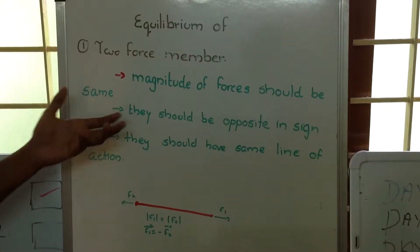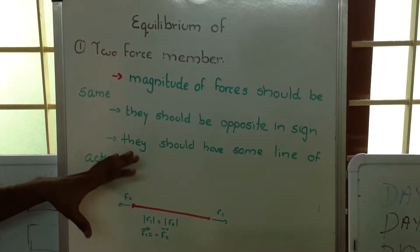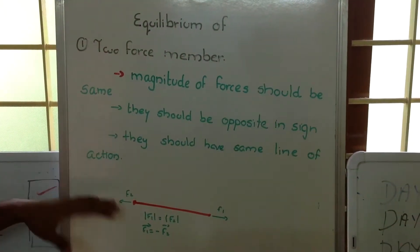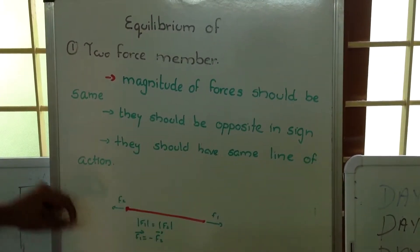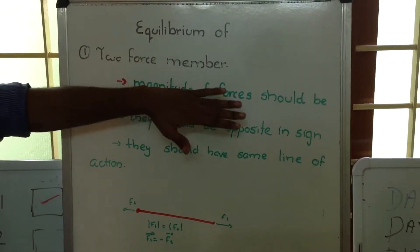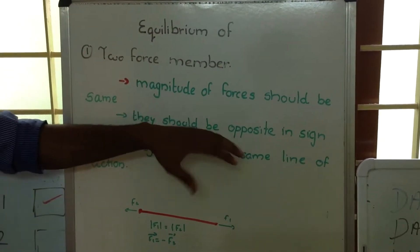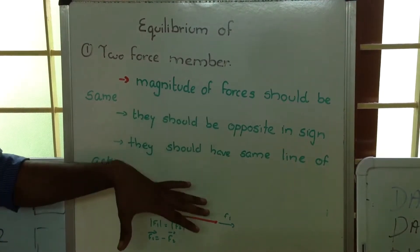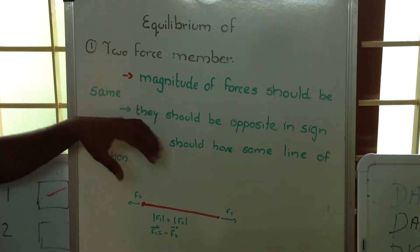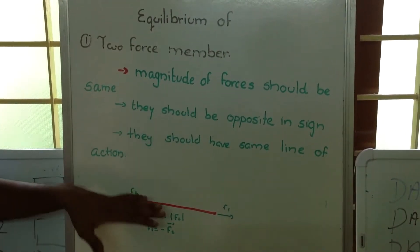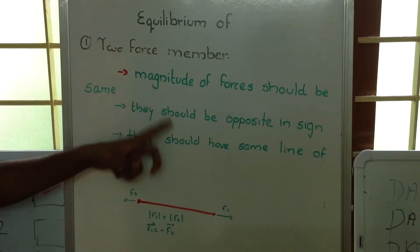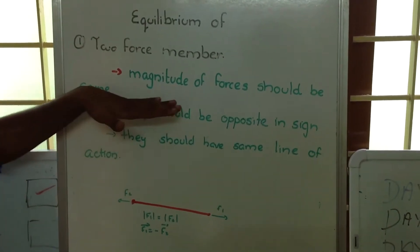In the theory of machines, we come across various elements where we have forces acting on members. Now we are going to discuss the equilibrium of a two-force member. It is a static condition — for a member to be in equilibrium and acted upon by two forces, certain conditions should be satisfied.